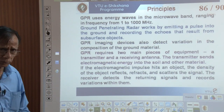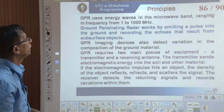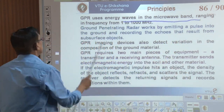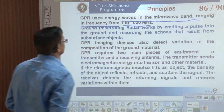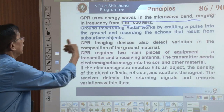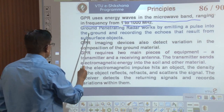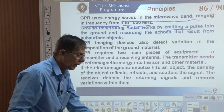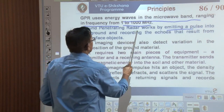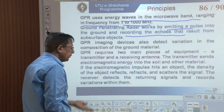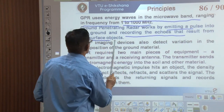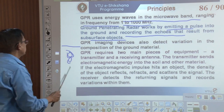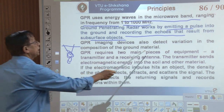GPR uses energy waves in the microwave band, ranging in frequency from 1 to 1000 megahertz. GPR works by emitting pulses into the ground, and recording the echoes — the reflected signals — that result from subsurface objects below. We may have a rock body, iron, metal, concrete, or some structure — it may be hit and the reflected signal is recorded.